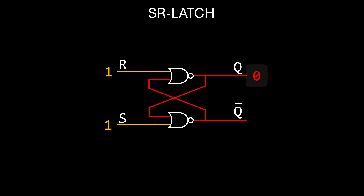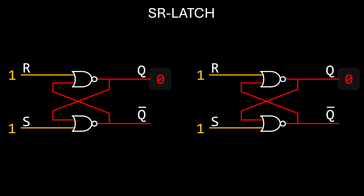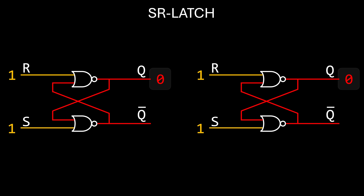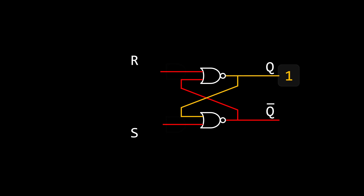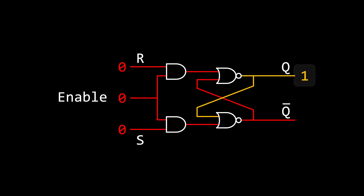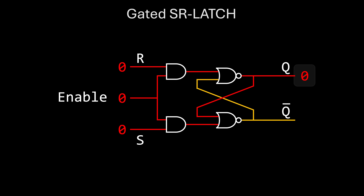Setting both inputs to 1 doesn't make sense because we shouldn't be trying to set and reset at the same time. While both inputs are activated, both Q and its inverse are forced to 0, which doesn't make sense — they should never output the same value. Another issue arises when we set both inputs back to 0: the circuit might end up holding either a 1 or a 0 depending on which input changes a few nanoseconds before the other, creating uncertainty. A variation called the Gated SR latch includes an additional Enable input — when Enable is 0, the other inputs have no effect, and we can only set or reset the latch by activating the Enable signal.